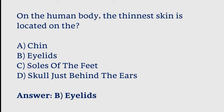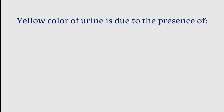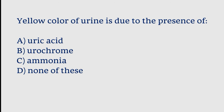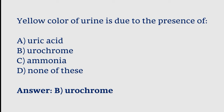Yellow color of urine is due to the presence of: uric acid, urochrome, ammonia, or none of these. The correct answer is option B. The yellow color of urine is due to the presence of urochrome.